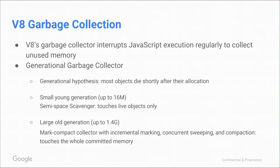If the hypothesis doesn't hold, they can take longer. It turns out for many applications and websites it holds, so we find the architecture is good. The large old generation can take up to 1.4 gigabytes. This is where objects get moved after they've been live for quite some time on the V8 heap.